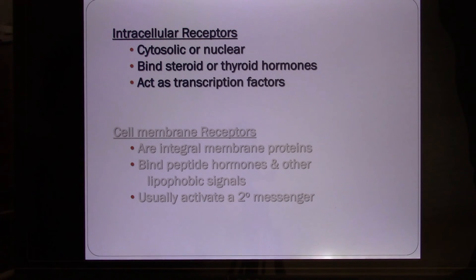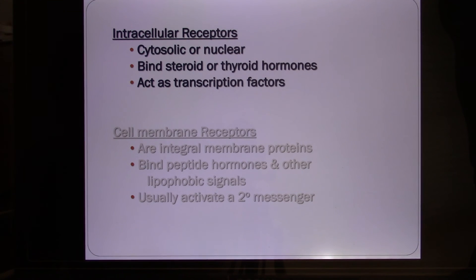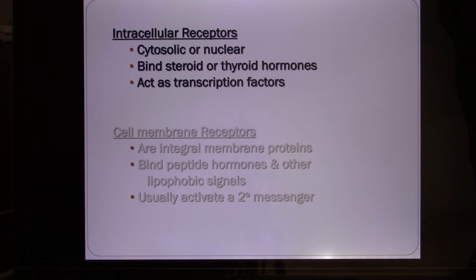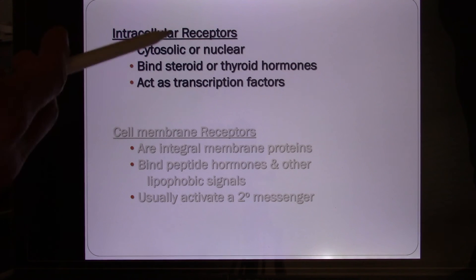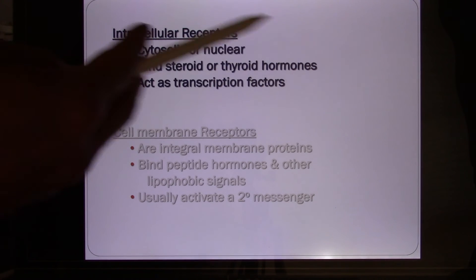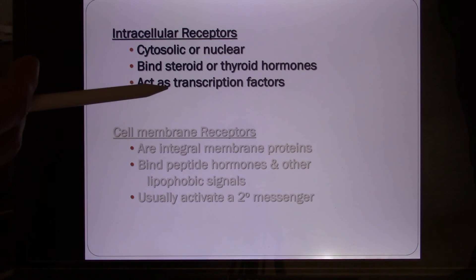Intracellular receptors are for steroid hormones, lipid hormones, or hormones that behave like lipids — like thyroid hormones T3 and T4, released from the thyroid gland. Although thyroid hormones are made from one amino acid and are technically amines, they actually behave like steroid hormones. So steroid hormones and thyroid hormones use simple diffusion to go through the cell membrane, and you put the receptor inside the cell — they have intracellular receptors.